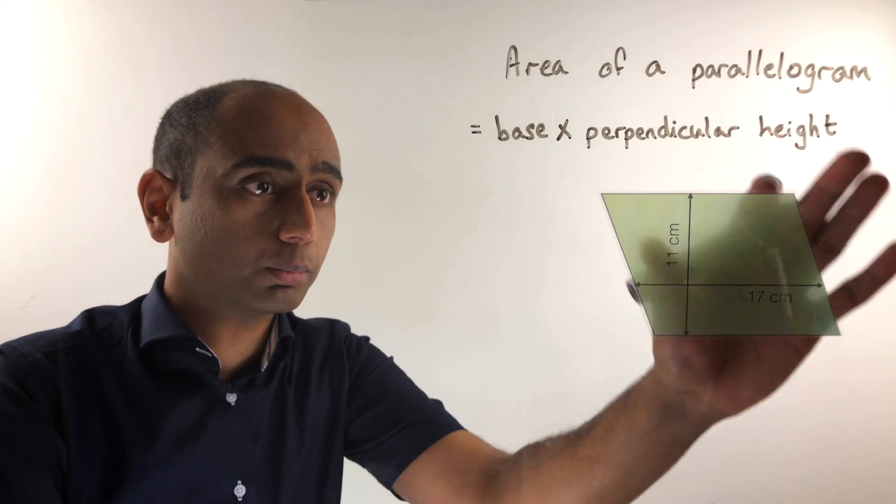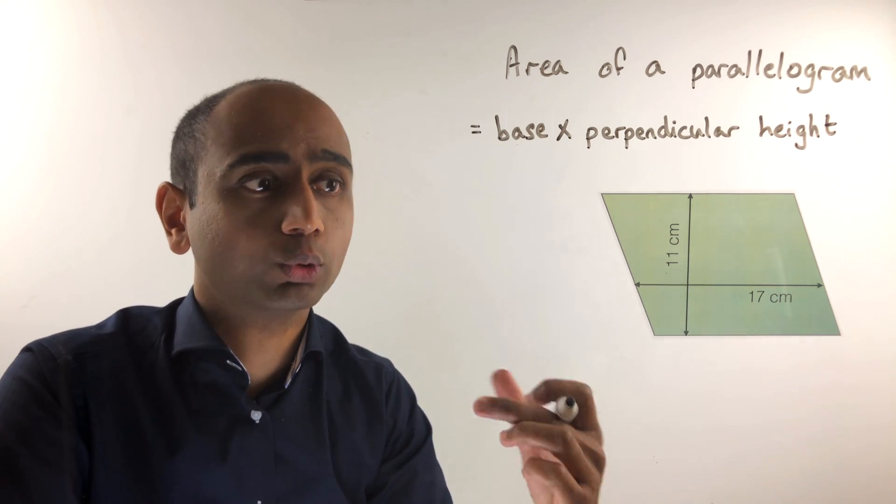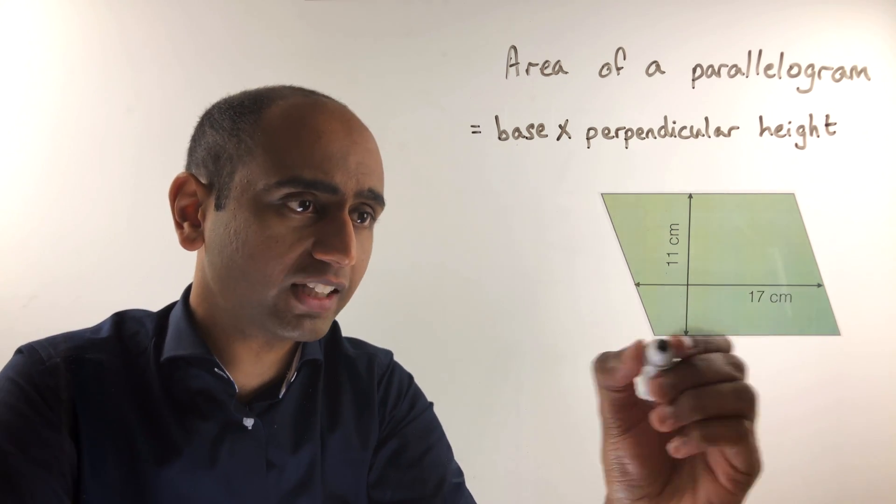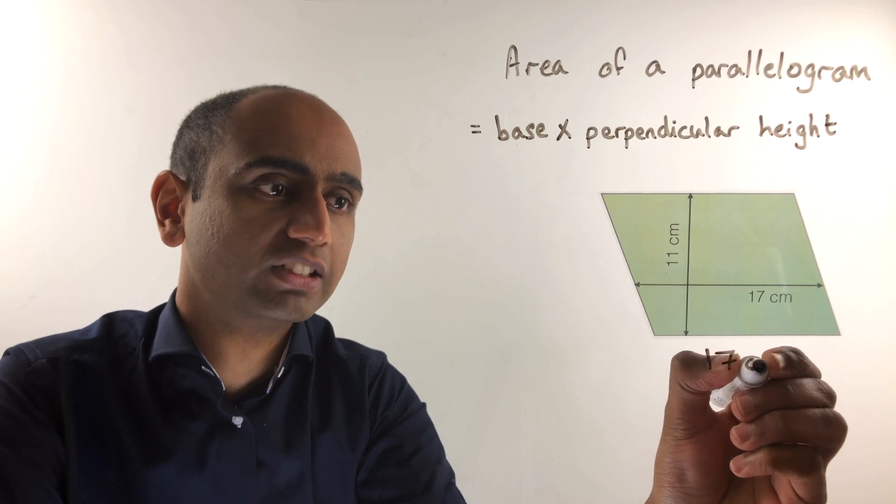Finally in the third example we have this parallelogram. Now the base hasn't been clearly labelled, but hopefully you can spot that this is the same as this distance here. The base is 17 centimetres.